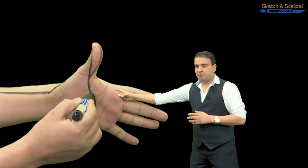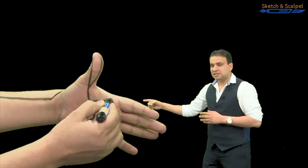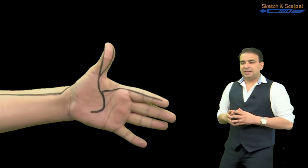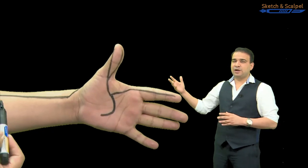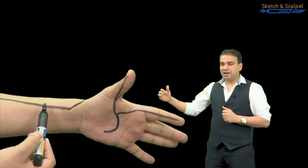It will also give off a branch which will run on the lateral side of the index finger, and that's why we call it radialis indices artery. It is radialis indices on the radial side of the index finger.